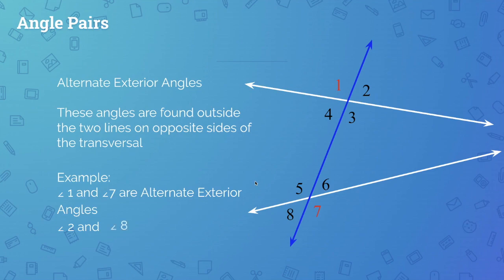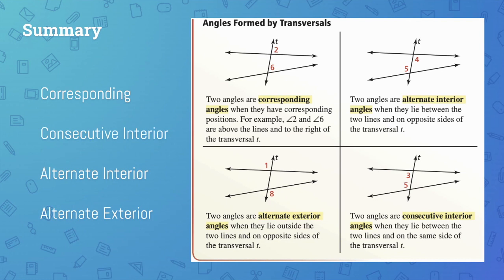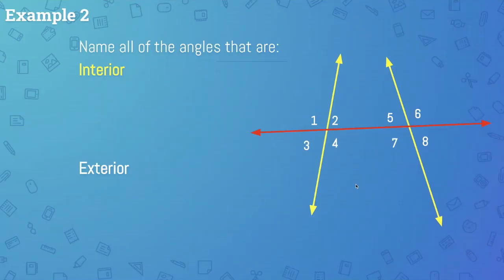Here's a summary of the four angle pair relationships, found in your textbook on page 128. Corresponding angles sit in the same relative position. Alternate interiors are interior angles on opposite sides of the transversal. Alternate exteriors are exterior angles on opposite sides of the transversal. Consecutive interior angles are interior angles on the same side of the transversal. One student asked about consecutive exterior angles — we don't really care about those.